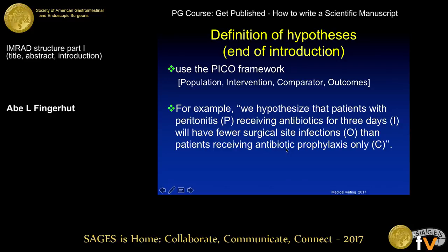We hypothesize that patients with peritonitis — this is our population — receiving antibiotics for three days — this is our intervention — will have fewer surgical site infections — this is our outcome — and patients receiving antibiotic prophylaxis only — this is our comparison. We have those four items in one sentence and we know where we're going.